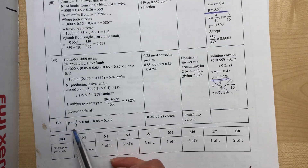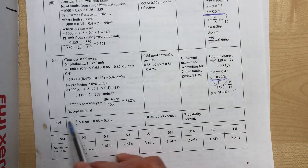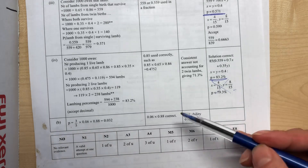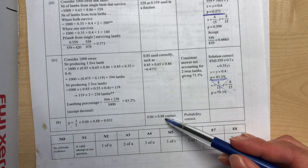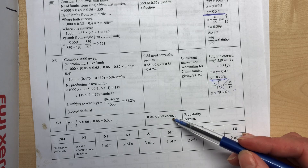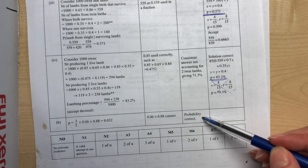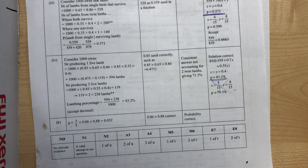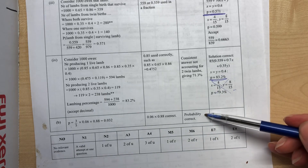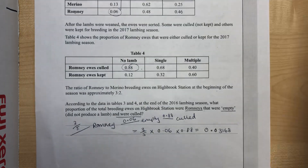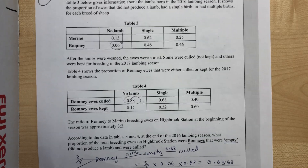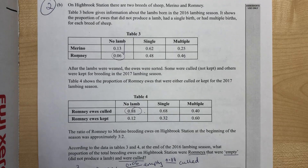Let's take a look at the mark scheme. We can see that's the working right there. If you got to the point of doing 0.06 times 0.88, that got you an achieved. If you did the whole thing correctly, that got you a merit. The reason it's a merit for a fairly simple calculation is because they gave you so much in the question that you had to decipher and pick out — that's where the skill was, and that's what you're awarded merit for.